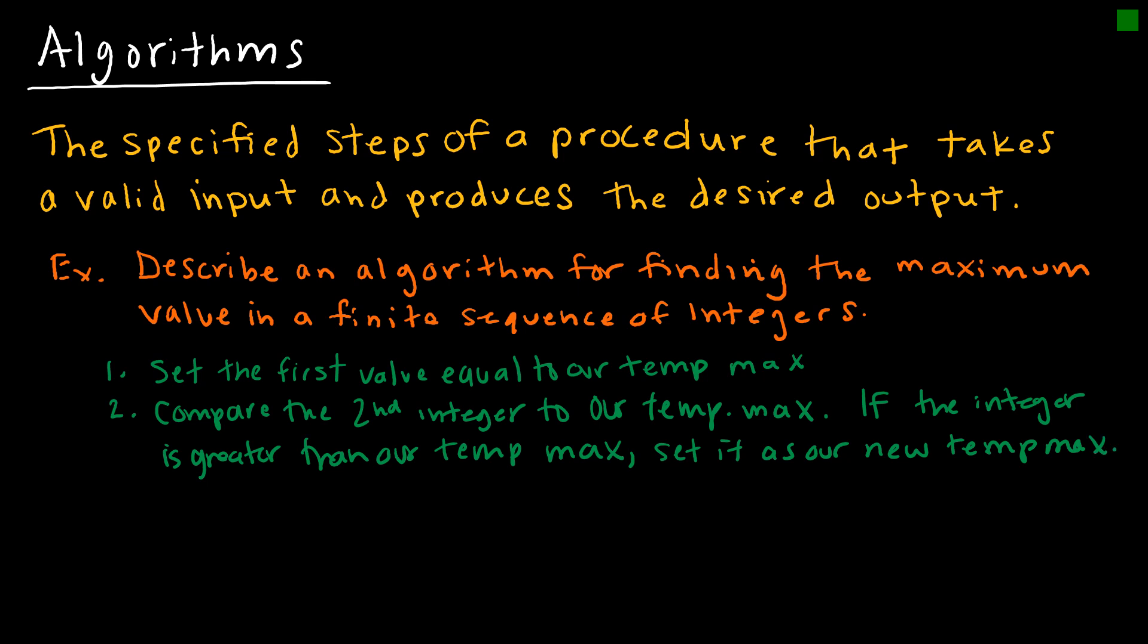So what's going to happen if it's not greater? Otherwise ignore. Essentially, we're just going to repeat these steps until no more integers exist.